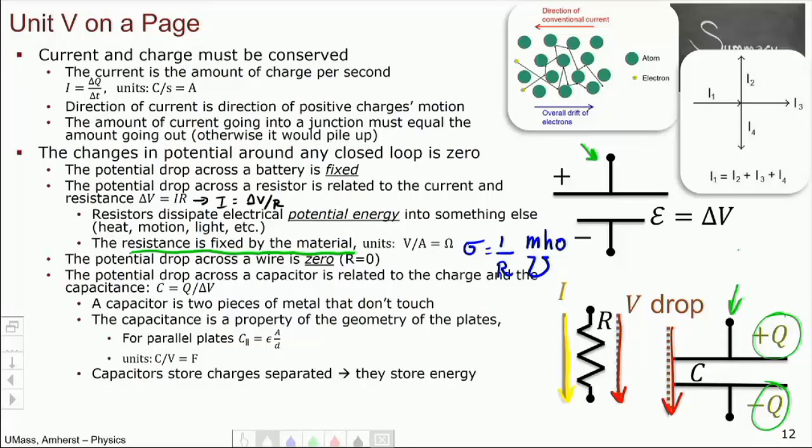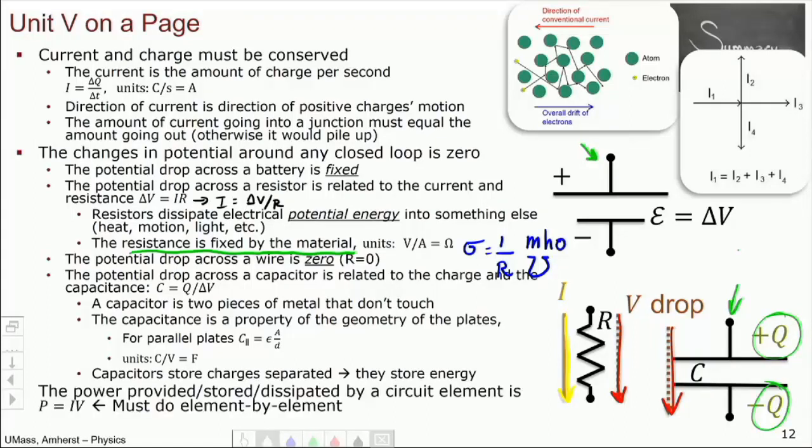So what do capacitors do? Well, we've got these two charges, right? They're separated. They want to be together. So they store energy. And then the last thing, the amount of power, stored, dissipated, whatever, by a given circuit element, is IV. You have to do this element by element. And this should make sense if you think about the units. Current is coulombs per second. Volt is joules per coulomb. Do the math. You end up with joules per second, which is energy per time, which is a power.